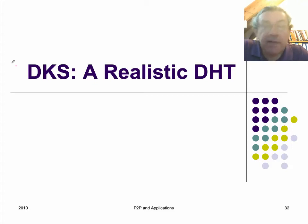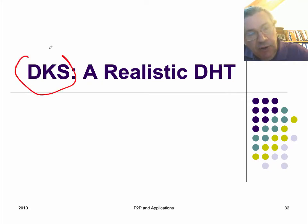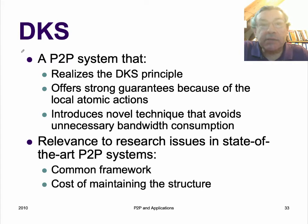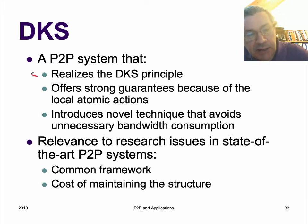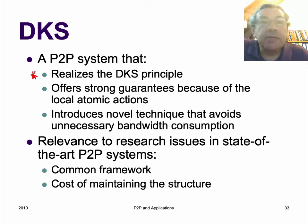Now let's look at a real DHT built according to the principles we just talked about. This is a system called DKS. DKS is a real peer-to-peer system that realizes the DKS principle that we talked about, but it extends it to do all the things that a real system has to do.